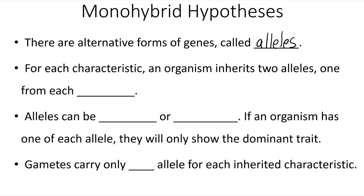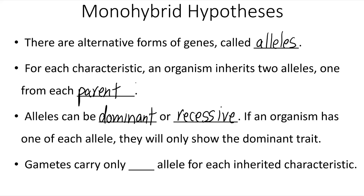For each trait an organism has, an organism inherits two alleles, one from each parent. Mendel also observed that alleles can be dominant or recessive. If an organism has one of each allele, they will only show the dominant trait. Lastly, Gregor Mendel proposed that gametes — the sex cells, sperm and egg — each carry only one allele for each inherited characteristic.